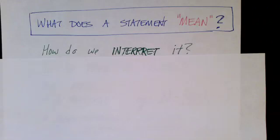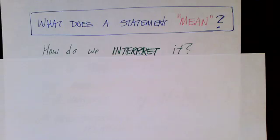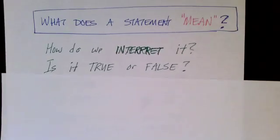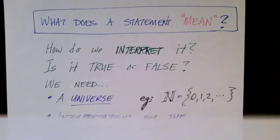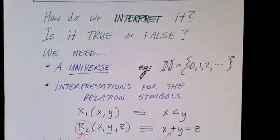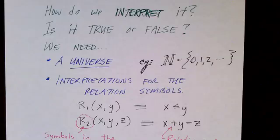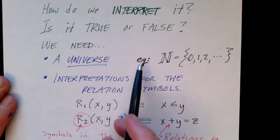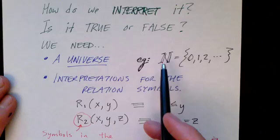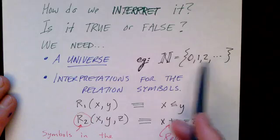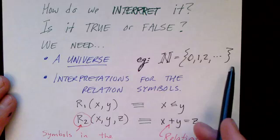Now it's time to ask: what does a statement mean? Given a logical formula, how do we interpret it, and is that formula true or false? In order to interpret a formula, we need a universe and interpretations for the symbols. The universe is just a set of objects — in our earlier examples, our universe was the set of numbers or integers, for example the set of natural numbers.